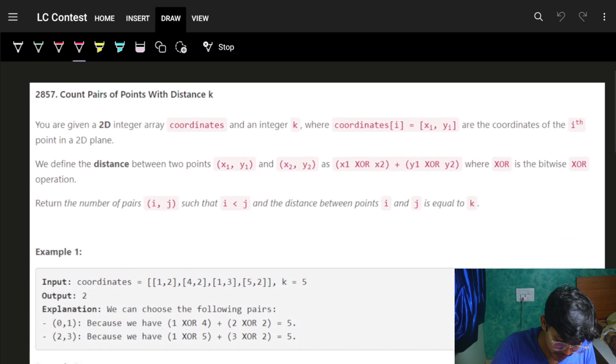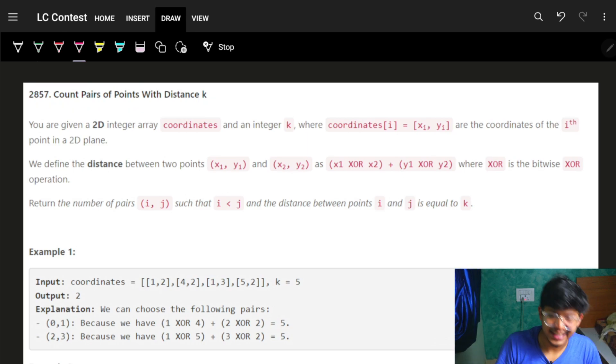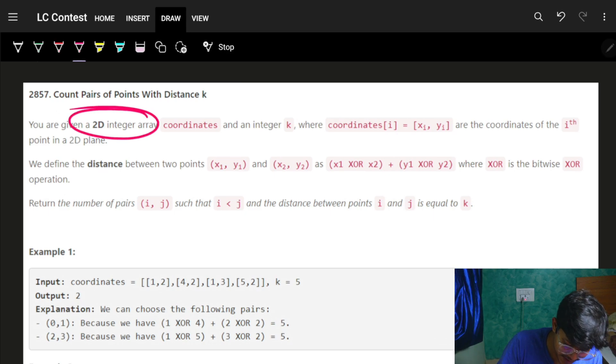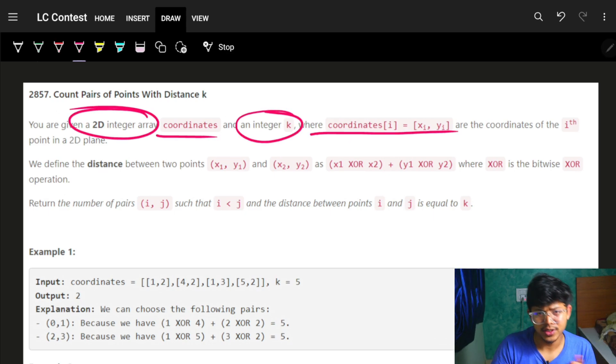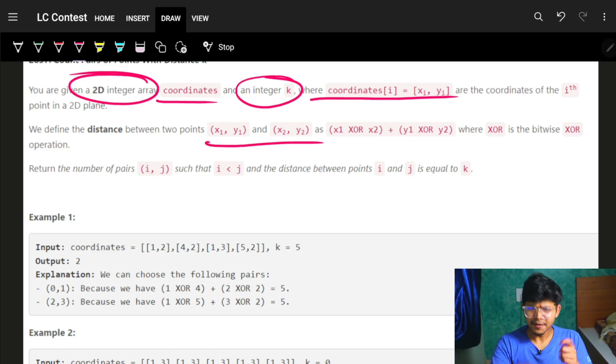This problem is much easier than the previous one, although it's rated harder. It says count pairs of points with distance k. We have a 2D integer array called coordinates, where each coordinate is (xi, yi), and the distance between two points (x1, y1) and (x2, y2) is defined by (x1 XOR x2) plus (y1 XOR y2).